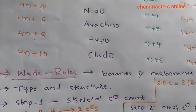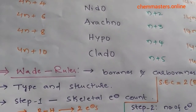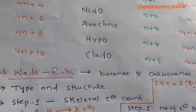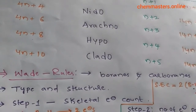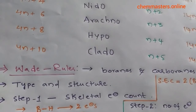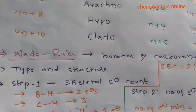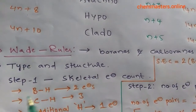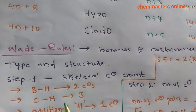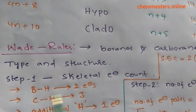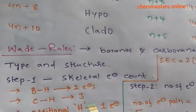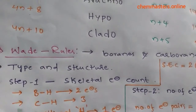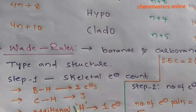To determine borane types and structures, the first step is to calculate the skeletal electron count — the number of electrons involved in the formation of the skeleton, i.e., the boron cluster. Each BH unit contributes 2 electrons to the boron cluster. Each CH unit contributes 3 electrons to the boron cluster. If additional hydrogens are present, each additional hydrogen contributes 1 electron.